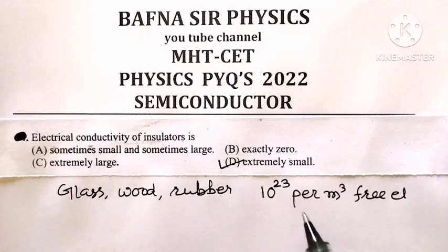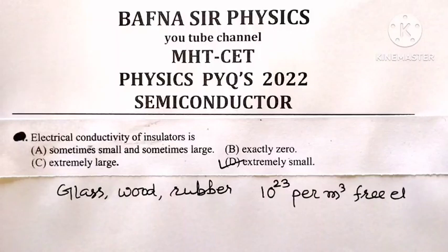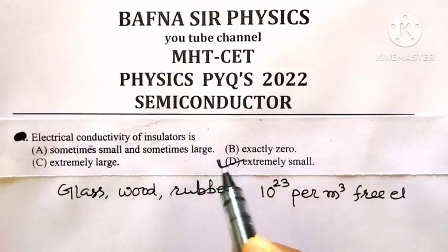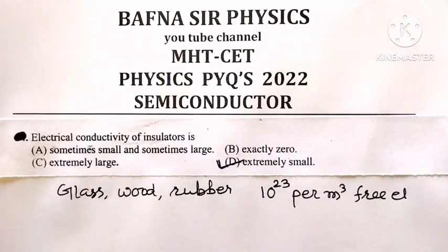they still have 10 raised to 23 per cubic meter free electrons. And that is why, due to availability of such a small number of free electrons, electrical conductivity of insulators is extremely small. So option D is the correct option for this question.